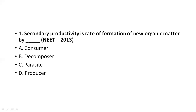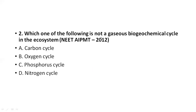The next question: which of the following is not a gaseous biogeochemical cycle in the ecosystem? Phosphorus cannot exist as a gas. Carbon can be seen as a gas in the form of carbon dioxide. Oxygen is also a gas. Nitrogen exists as nitrogenous gas. But phosphorus does not. So the correct answer is phosphorus.